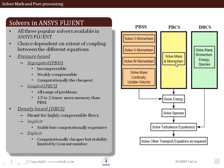The pressure-based coupled solver considers the continuity and momentum equations together as one single set, solving them simultaneously. Once converged, it solves energy, species, and other transport equations. The density-based coupled solver is even stricter — it combines mass, momentum, energy, and species into one hypermatrix and solves for all of them across the whole domain, then solves turbulence and other equations afterward.